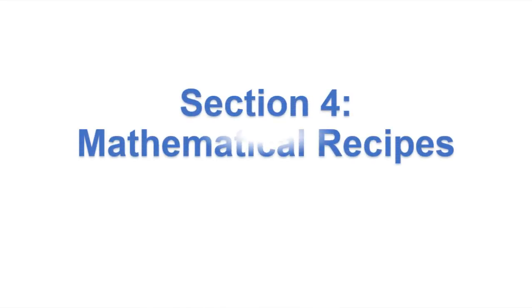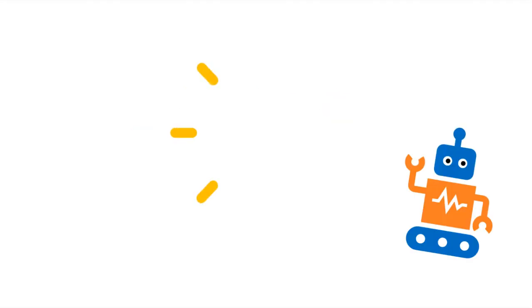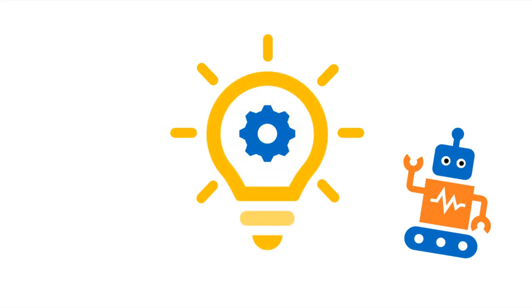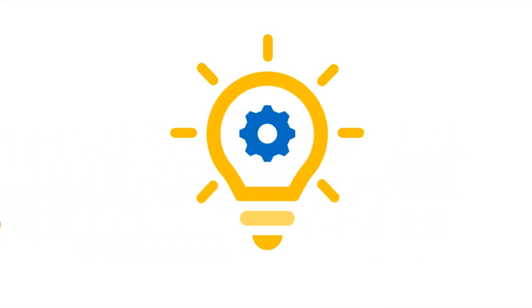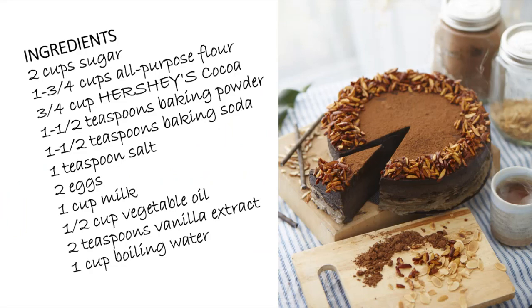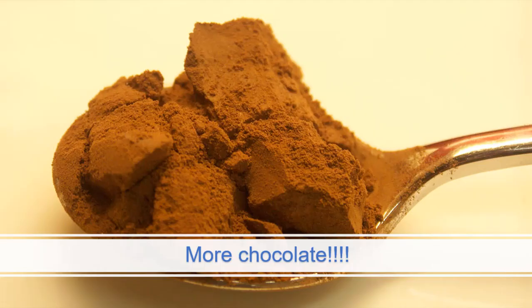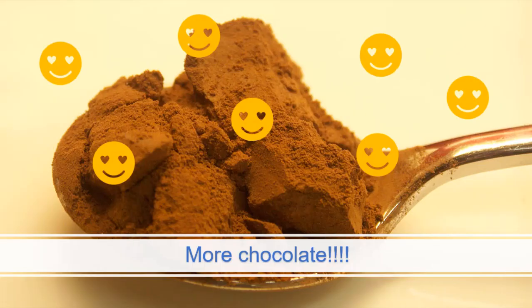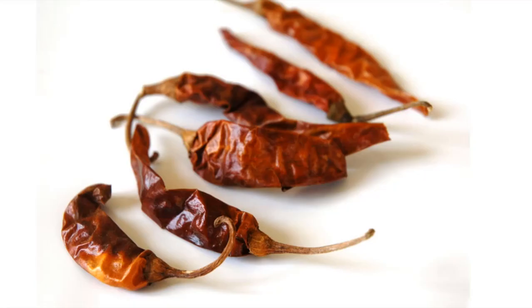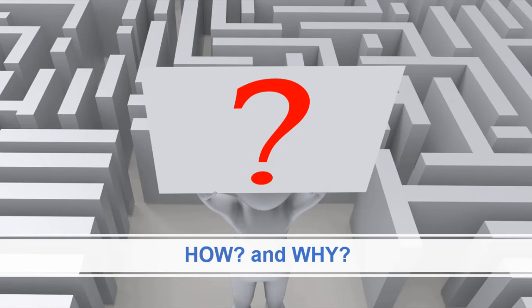Welcome back to the Computational Thinking series. This is the fourth in our series of videos about computational thinking and FTC blocks programming. In the last video, we explored how a set of instructions with defined inputs will produce a specific result. The results will differ depending on the set of instructions and inputs. Some components of computational thinking can be difficult to understand or apply, so we're going to take a closer look at how and why you might use this during the video.